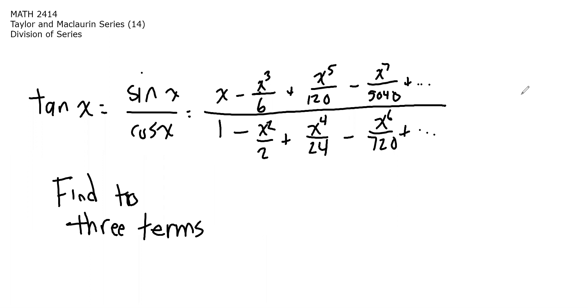Well, I've already got this set up, but this is going to be the last video. You can find a series for a function if you can write it as the quotient of two functions whose series you already know. The classic example is to find the Maclaurin series for tangent of x by viewing it as sine x over cosine x, both of whose power series we know.